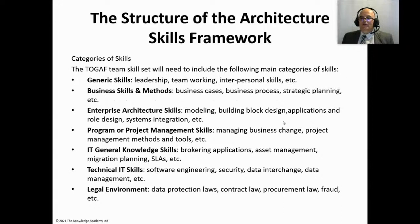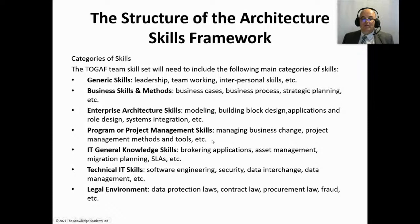The skills have been broken down into seven main areas. We have generic skills such as leadership and teamworking; business skills and methods such as business case development, business process, and strategic planning; enterprise architecture skills such as modeling and building block design; and program and project management skills covering managing business change and project management methods; and IT general knowledge skills such as brokering applications and asset management.